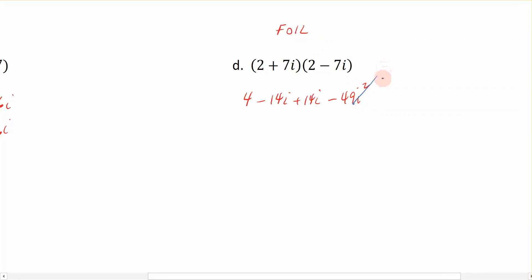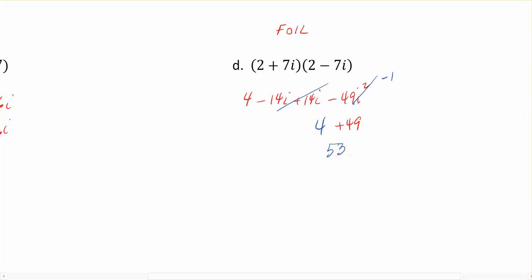The last term gives us negative 49 i times i, which is i squared. Just like our previous example, we know i squared is really negative 1, so negative 49 turns into positive 49. So we have 4, and the negative 14i and positive 14i cancel each other out, leaving us with 4 plus 49, which is just 53. Notice that when I multiplied these two binomials using FOIL, in this particular case we ended up moving from a complex number with both real and imaginary parts to just a simple real number.